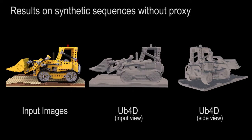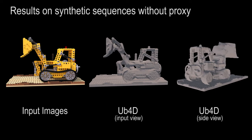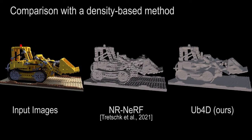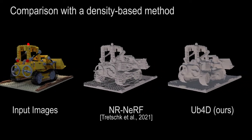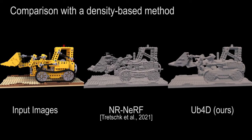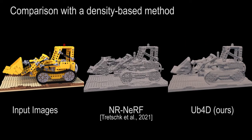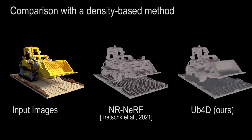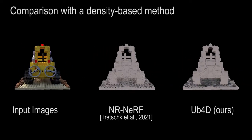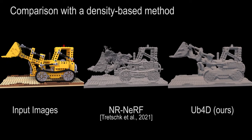Our method achieves high 3D reconstruction accuracy even in challenging monocular scenarios. Here we compare our unbiased SDF scene representation with a coordinate-based volume density approach, followed by surface extraction with marching cubes. Our representation works better for dynamic areas, which cannot be reconstructed at all by the implicit volume-based method. Moreover, our 3D reconstruction contains less overall noise.